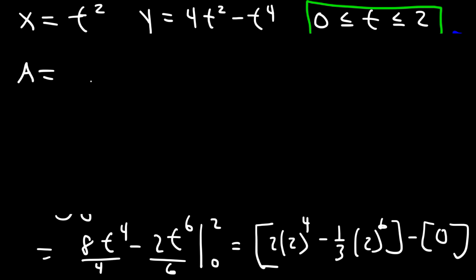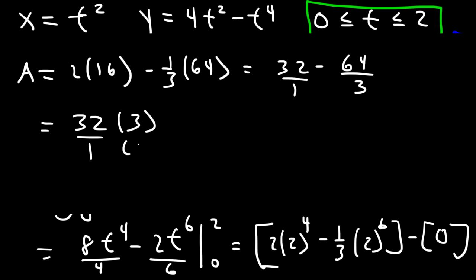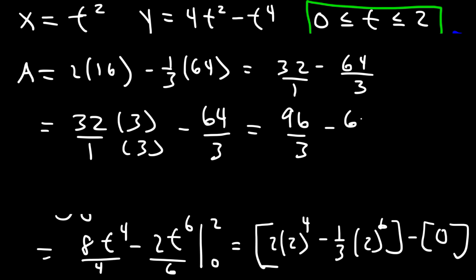The area is 2 times 2 to the 4th minus one third times 2 to the 6th. Since 2 to the 4th is 16 and 2 to the 6th is 64, this becomes 32 minus 64 over 3. Getting a common denominator, 32 becomes 96 over 3, so 96 over 3 minus 64 over 3 equals 32 over 3. The area is 32 over 3.